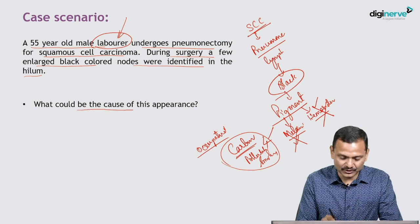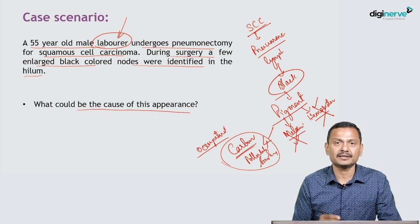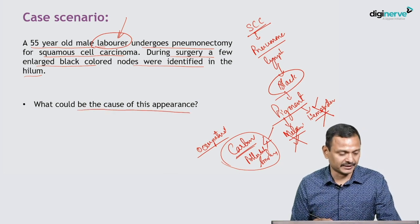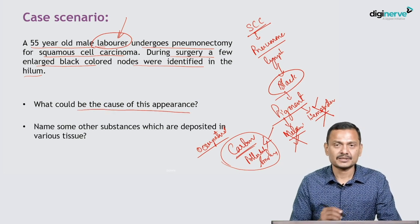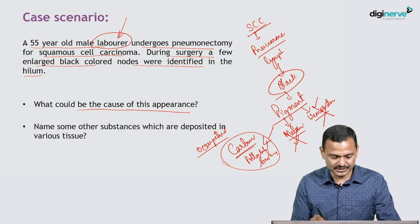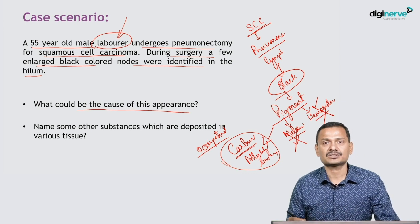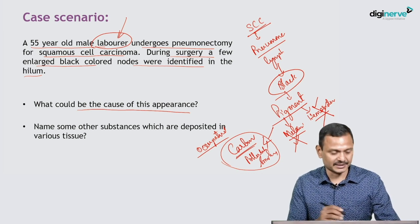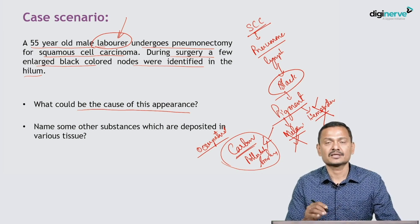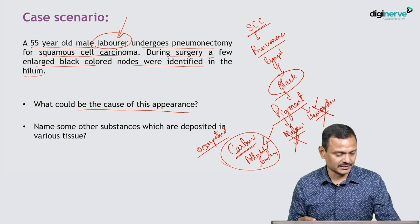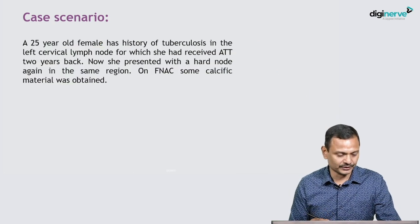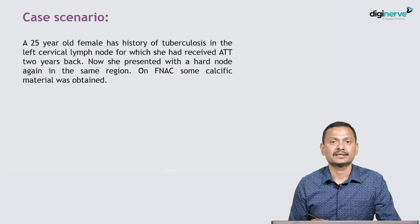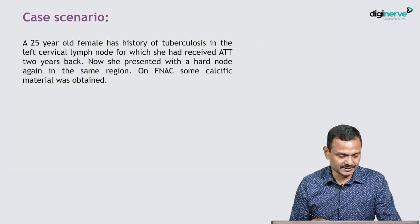What could be the cause of this pigment? It is a carbon-laden pigment. We'll name some other substances which are deposited in various tissues and will be discussing all of this throughout this session. Now we move on to our next case scenario.